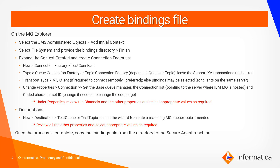If the client is on the same machine where the queue manager is hosted, we can select the binding as transport type. Accordingly, change the connection properties for the transport and the connection factory that has been created to set to the base queue manager, setting the queue manager for the specific binding file that is being created. Change the connection list pointing to the server where the IBM queue is hosted, and the character set and other properties can be reviewed and updated accordingly.